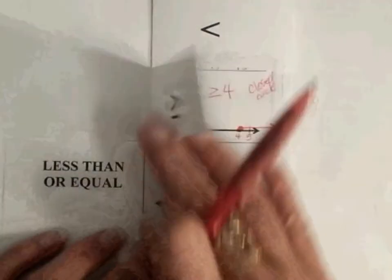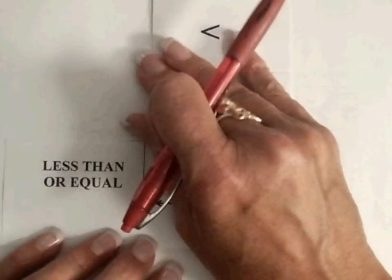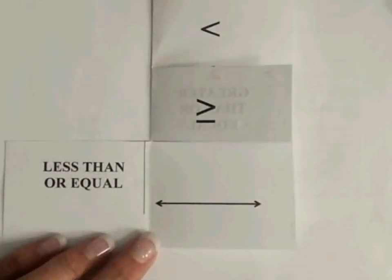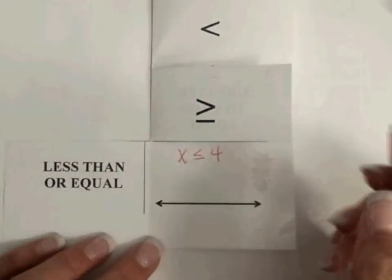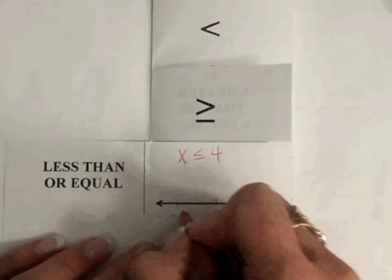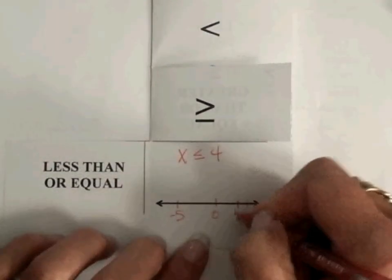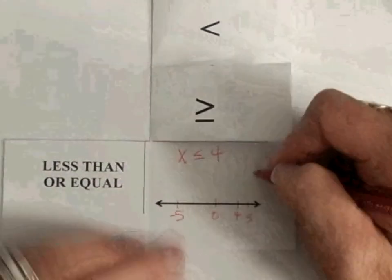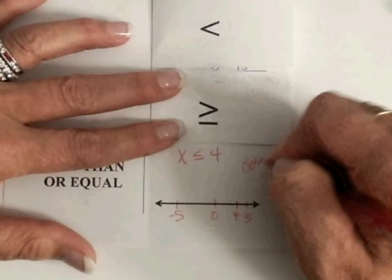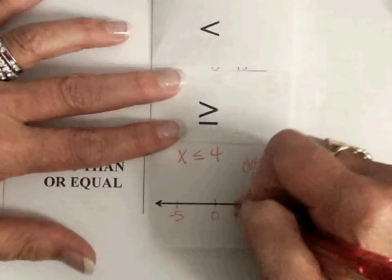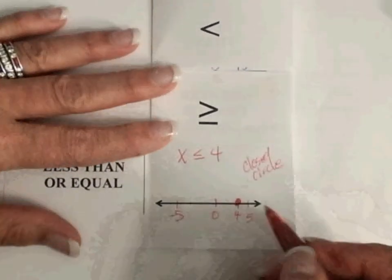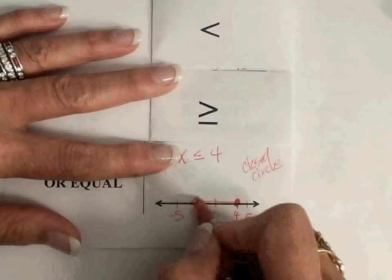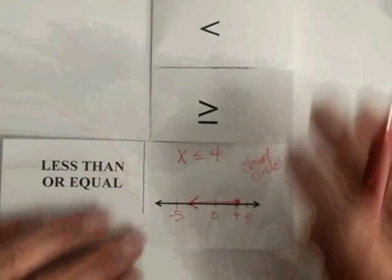Our last one is less than or equal to, and again, they combined the less than sign and the equal sign. And so we're going to do x less than or equal to 4. We're going to do our number line, and we're going to mark 4 again. Now, we're including 4, so it's going to be a closed circle. And this time, we want all numbers less than 4, so our arrow points to the left, because that is all numbers less than 4.